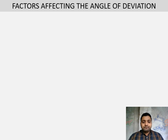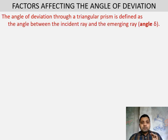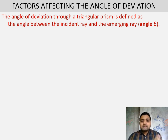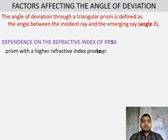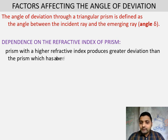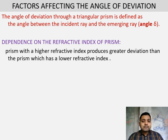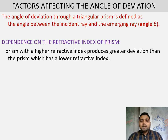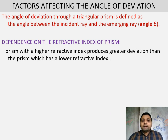Now, on which factors does this angle of deviation depend? First, it depends on the refractive index of the prism material. Different materials have different refractive indices. With increasing refractive index, the speed of light decreases, bending it more. A prism with a higher refractive index produces greater deviation, and one with a lower refractive index produces less deviation.